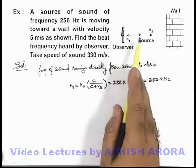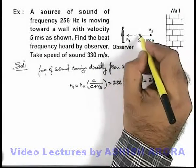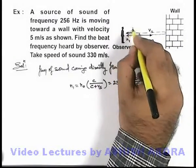This is the first frequency which it will receive directly from the source. Another frequency of sound it'll receive after reflection from the wall, say it is n₂.